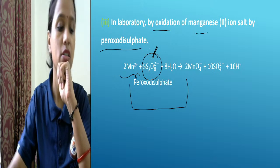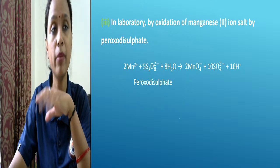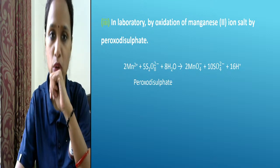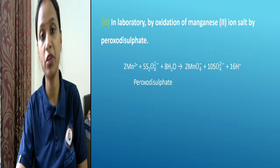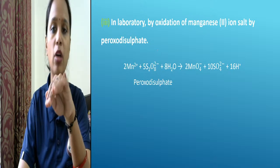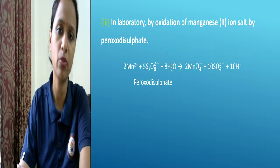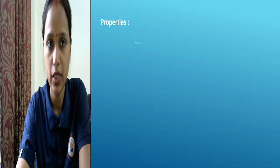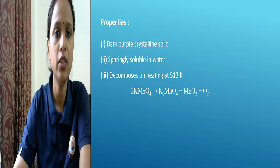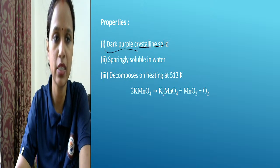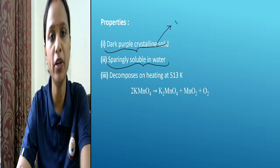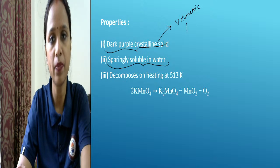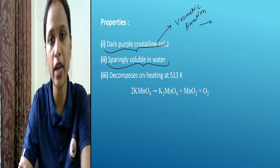If balancing is not done, marks will be cut. You have to learn these reactions because they are important — they are limited in your D-block. Now, potassium permanganate is a dark purple crystalline solid. It is very soluble in water and is mostly used in volumetric titrations as a standard solution — a solution whose concentration we know.